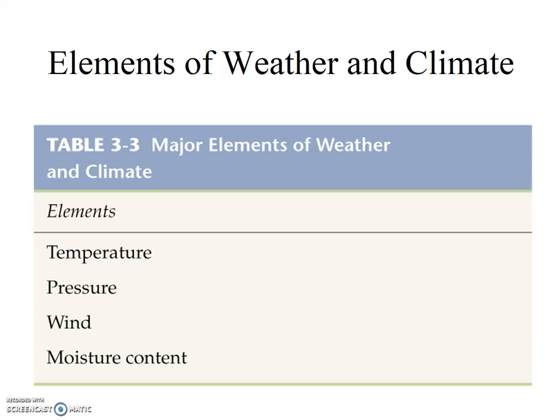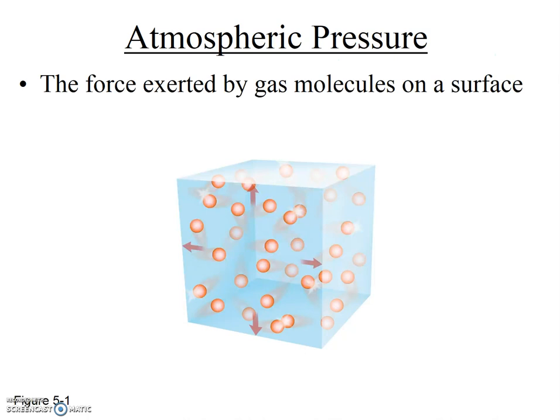Pressure is likely the element you are least familiar with. Our skin can feel temperature, wind, and moisture quite easily, but pressure generally goes unnoticed. But that doesn't mean it's less important. So what is atmospheric pressure? Here's a simple but effective definition from your textbook: the force exerted by gas molecules on a surface. The molecules that make up the atmosphere exert pressure on every surface they touch, even you. We don't notice this pressure because our bodies are in equilibrium inside and outside — the same pressure is felt on both sides. Also, the pressure exerted is omnidirectional, meaning it comes equally in every direction, so we don't feel as if we're being pushed one way or another.